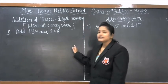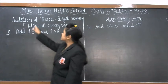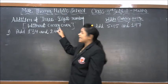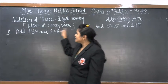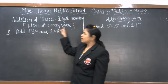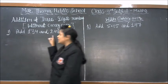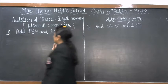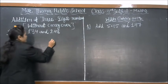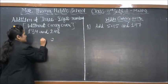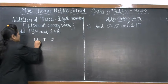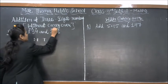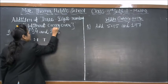This is our second exercise today. In this exercise, we are going to discuss addition of 3-digit numbers without carry over. We arrange the numbers in a column according to the place value chart with ones, tens, and hundreds.